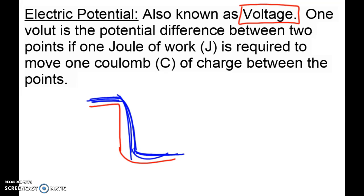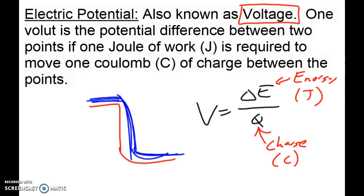So our equation then in this case is that voltage equals delta E over Q. So just like our previous examples, Q represents charge, which is measured in coulombs. And we have delta E. This is energy and is measured in joules.